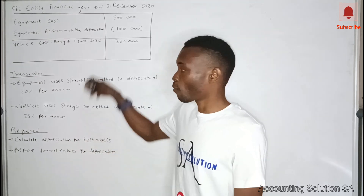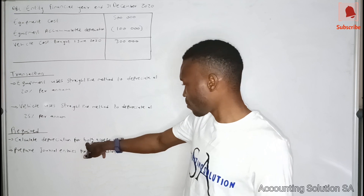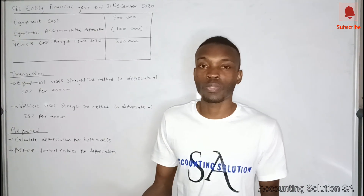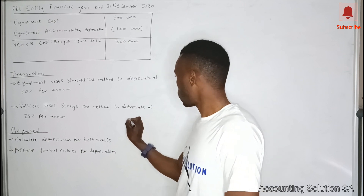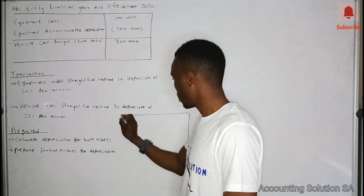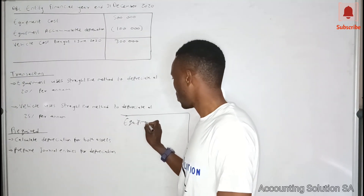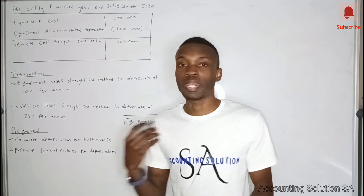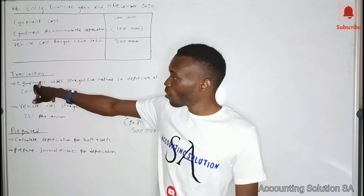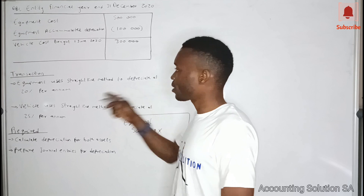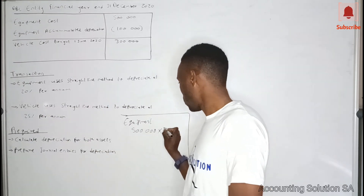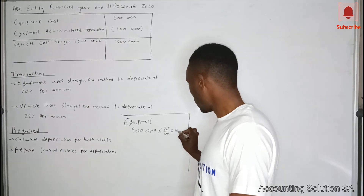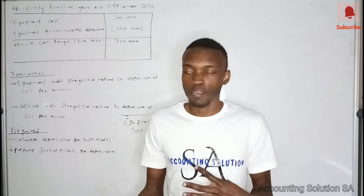We need to calculate depreciation for both assets and then do the journal entries. Let's start with equipment. The principle of the straight line method says we have to use the cost price. The equipment cost price is 500,000. We multiply by 20 over 100, which gives us a depreciation amount of 100,000.